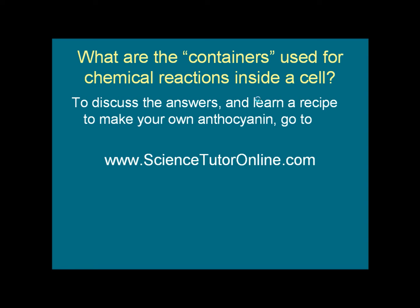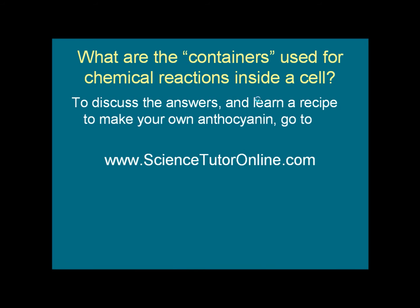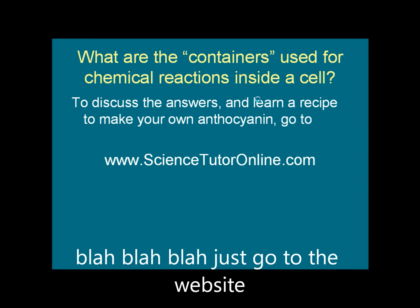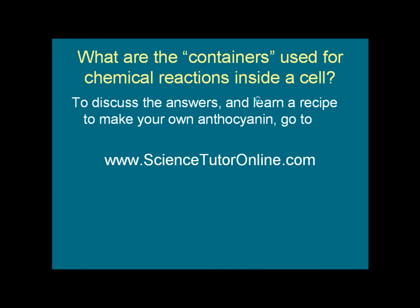If you want to discuss this, go to science-tutor-online.com, where you might find the anthocyanin. Another thing to think about, and this is even more important: we mix these chemicals and substances inside of a cup. When chemical reactions take place inside a cell, you also need some kind of container in order to allow the chemical reaction to happen. So what are the containers used for chemical reactions inside of a cell? You can discuss the answers there, and I'll also give you a recipe to make your own anthocyanin at science-tutor-online.com.